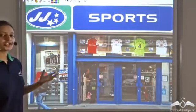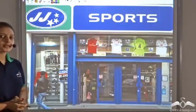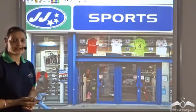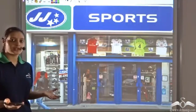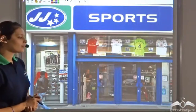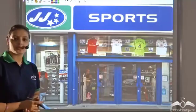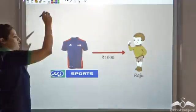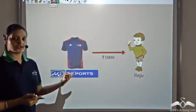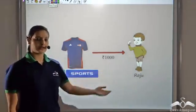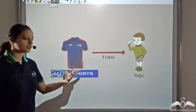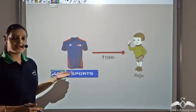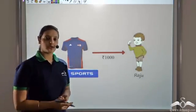This is a sports store called JJ Sports. They sell sports merchandise. The Indian Premier League of Cricket, commonly called the IPL, was just around the corner, so IPL cricket matches were about to start. Hence Raju decides to go to this store and buys a Delhi Daredevils t-shirt for 1000 rupees.